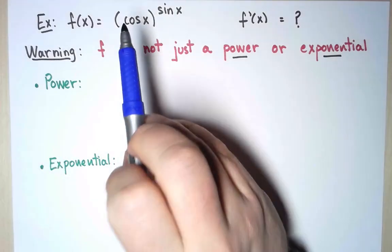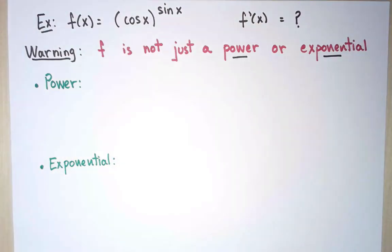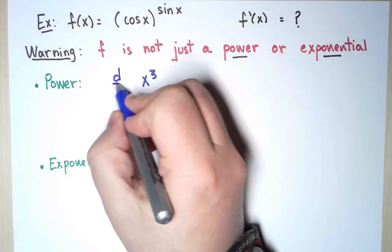A power would be a function that depends on x only on the base, and the exponent is a number. For example, x³. And I know how to take its derivative. That's what the power rule tells me.